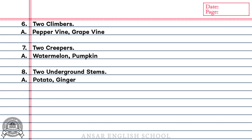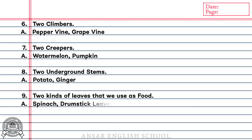Number 9: 2 kinds of leaves that we use as food. Answer: Spinach, Drumstick leaves.